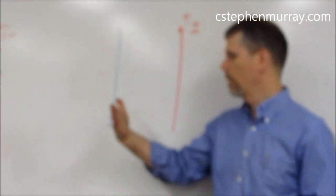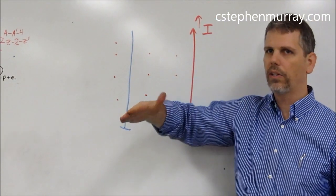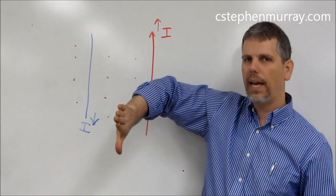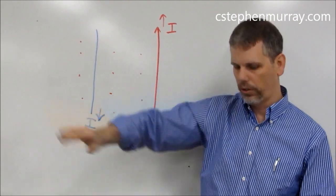then I can rotate my hand to find the direction of the current flow. Well, in this case, for the blue wire, the current is flowing down, so this wire feels a force away.